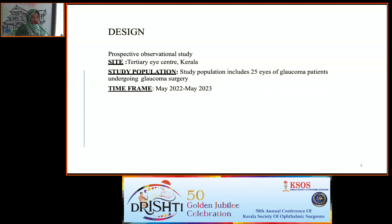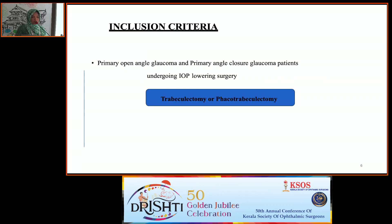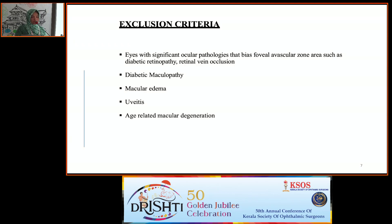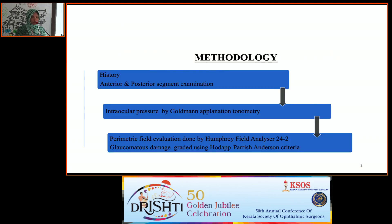Study design was a prospective observational study at a tertiary eye center in Kerala. Study population included 25 eyes of glaucoma patients undergoing surgery from May 2022 to May 2023. Inclusion criteria were primary open-angle glaucoma and primary angle-closure glaucoma patients undergoing IOP-lowering surgery — either trabeculectomy or phaco-trabeculectomy. Exclusion criteria included eyes with significant ocular pathologies that could bias the FAZ area, such as diabetic retinopathy, retinal vein occlusion, uveitis, and age-related macular degeneration.